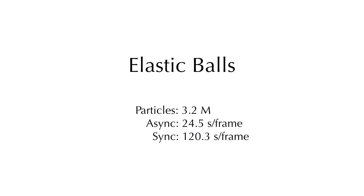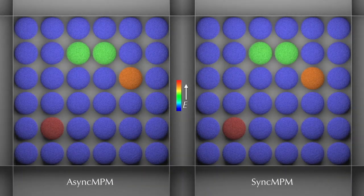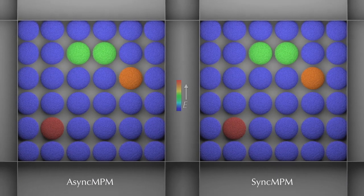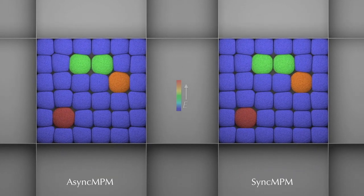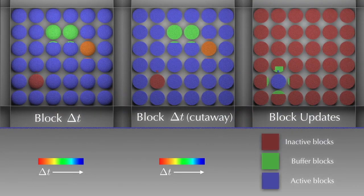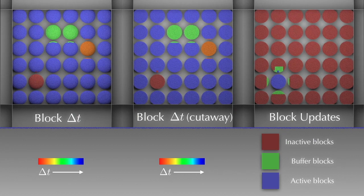In this 3D example, we compress elastic balls with different stiffness values. Though AsyncMPM does significantly fewer computations than SyncMPM, it leads to visually identical results. Here we show the time step for each block and how they are updated.